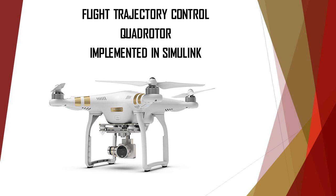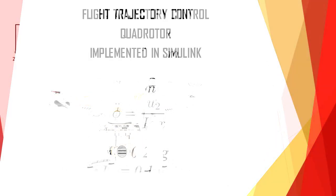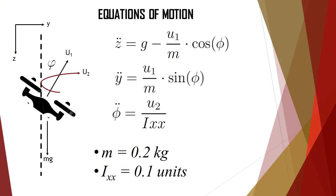Our drone will be modeled in two dimensions as shown here. We will only be moving in that plane with an angle of phi, which is the roll angle. U1 equals the force from the propellers and U2 equals the moment, the mass equals 0.2 kg and the moment of inertia equals 0.1 units.